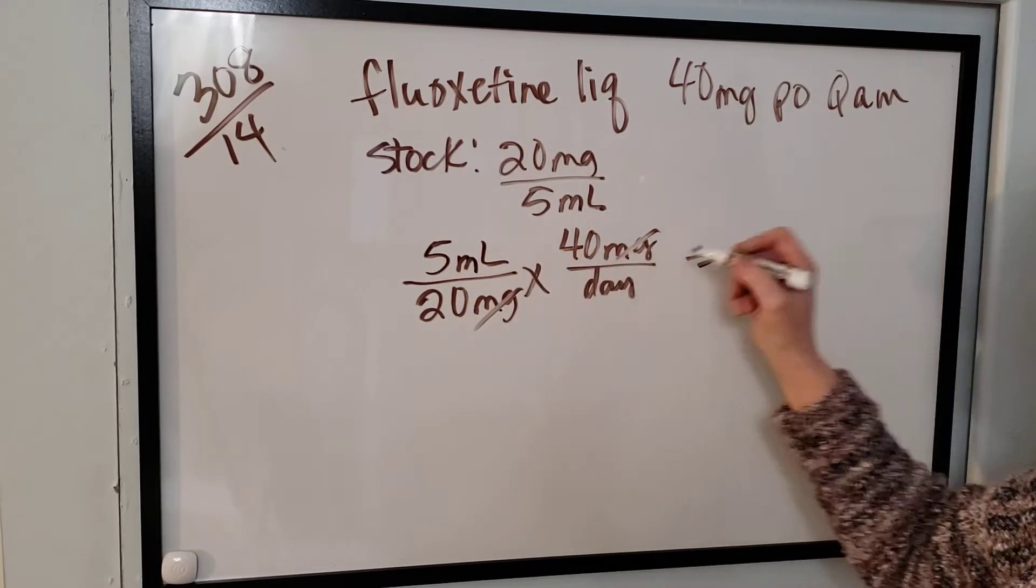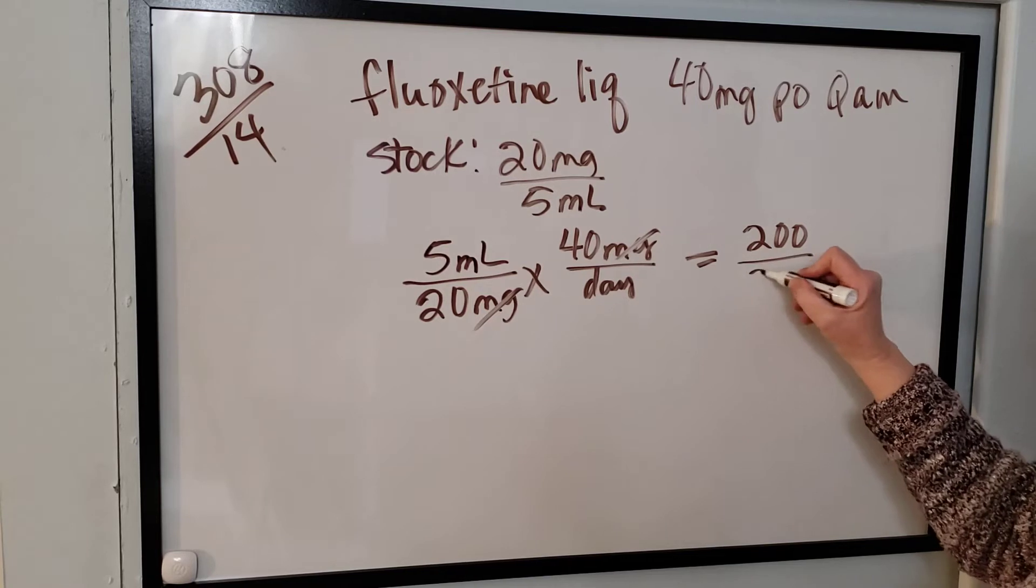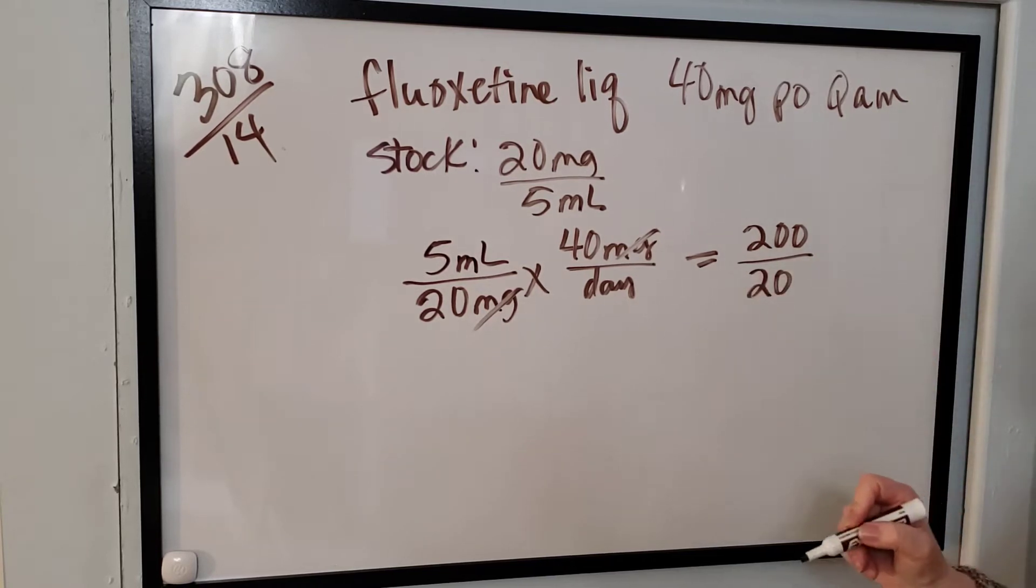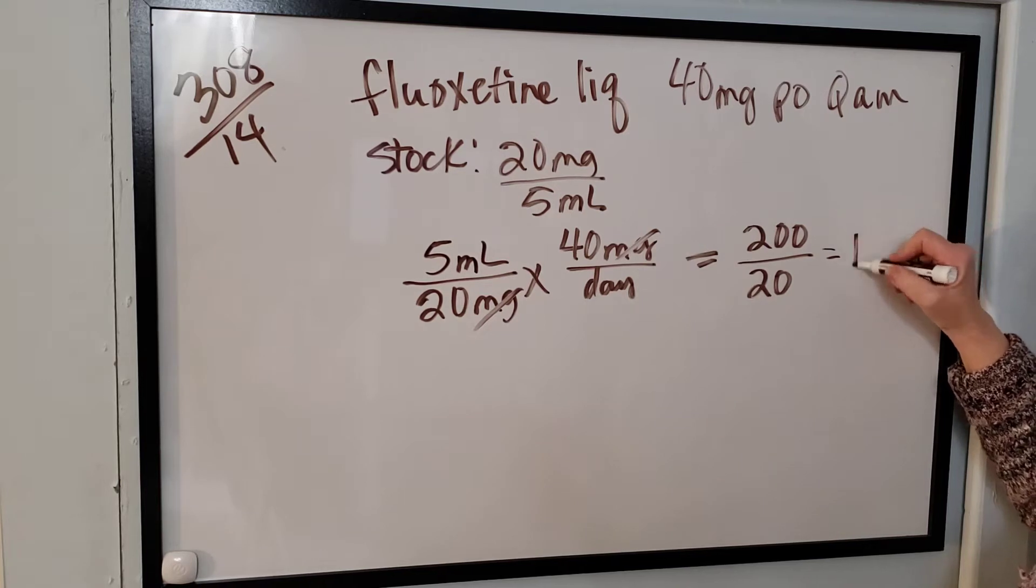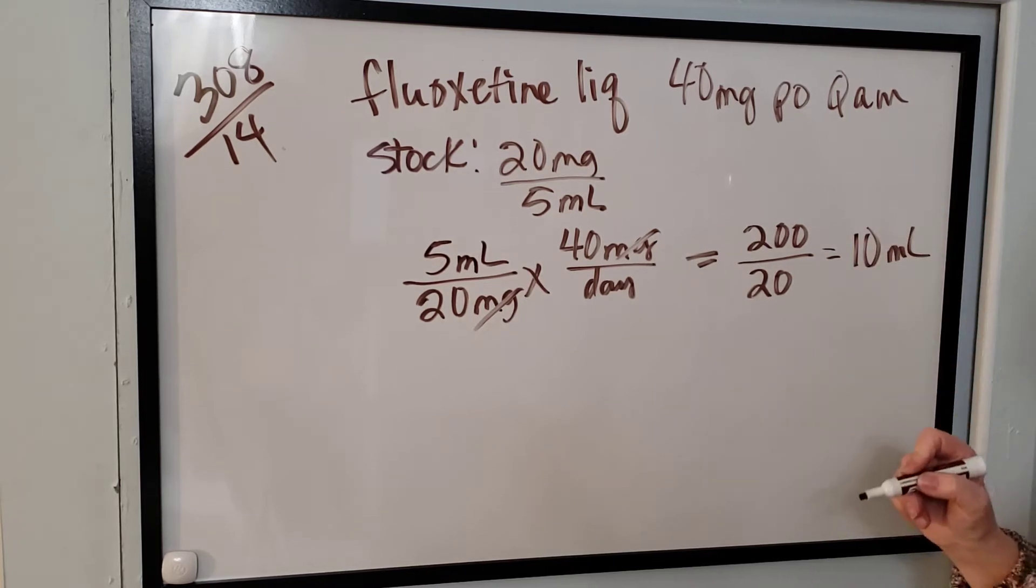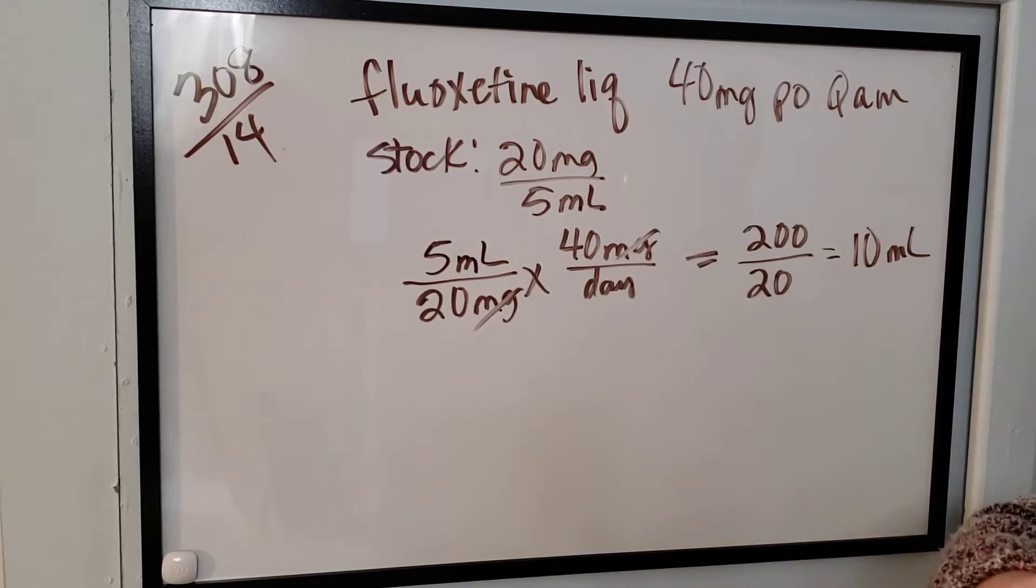5 times 40... 5 times 4 is 20, divided by 20. So they're getting 10 mL per day, and that's also just one dose: 10 mL per dose, one dose a day, 10 mL per day. Now the stock bottle is 120 milliliters.